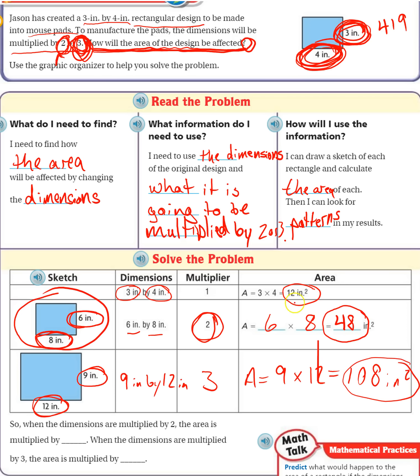So, they went from 12 to 48 to 108. So when the dimensions are multiplied by 2, the area is multiplied by what? So if we look, to get from 12 up to 48, I have to do 12 times what gives me 48. Well, again, if you know your math facts or your fact family, 4. So when the dimensions are multiplied by 2, the dimensions, that means the length and the width are multiplied by 2. The area is multiplied by 4.